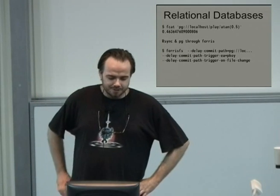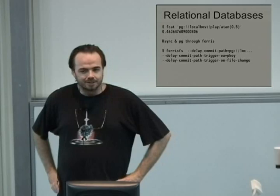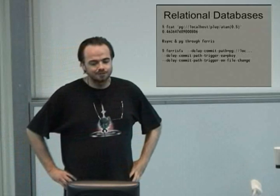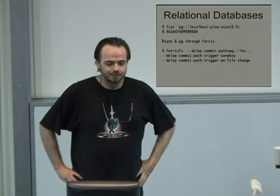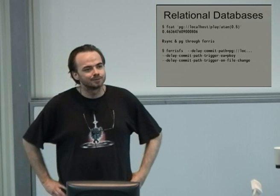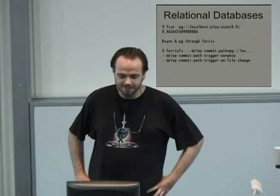For Postgres, there's special support for calling relational database functions through the file system interface — so if you want to know the ATAN of something, you can directly fcat the result. If you mount two Postgres tables as file systems through LibFerris, you can use rsync to copy one table from one Postgres database to another.